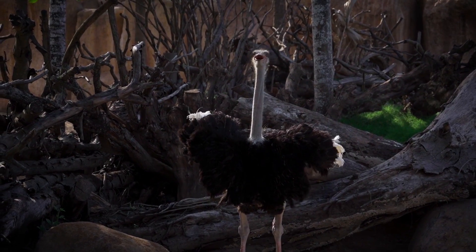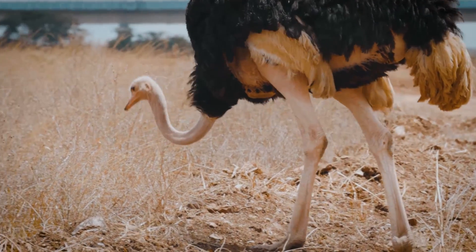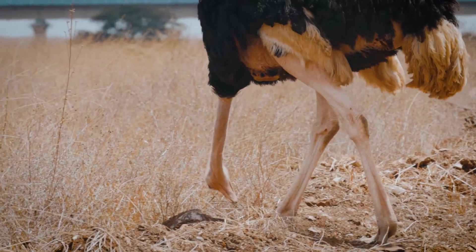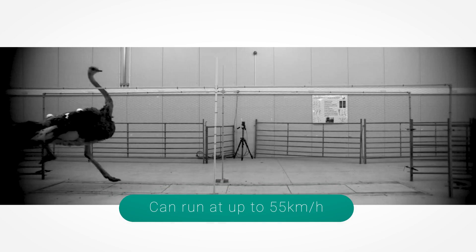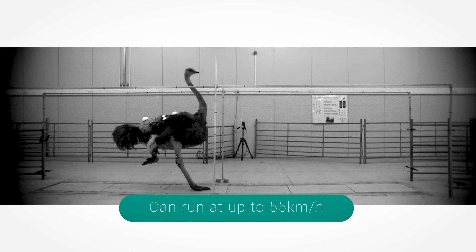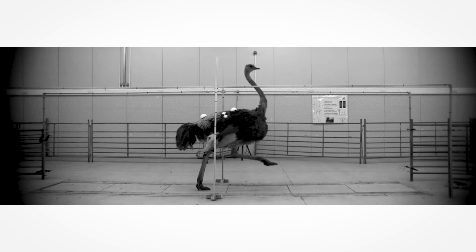Graceful, elegant, powerful. An animal like the ostrich is a mechanical marvel. Despite weighing over 100 kilograms, ostriches can run at up to 55 kilometers per hour through the savannah, or as seen here, through a laboratory.